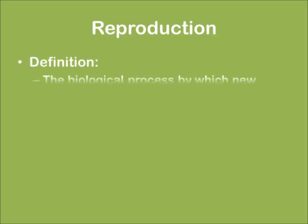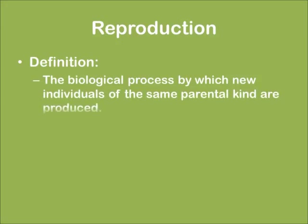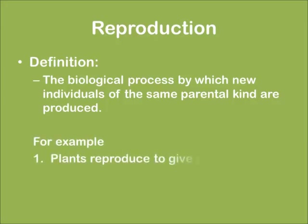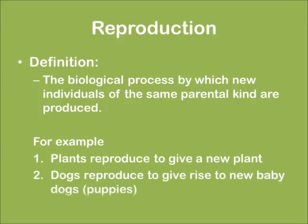Reproduction is a biological process by which new individuals of the same parental kind are produced. For example, plants reproduce to give a new plant. Dogs reproduce to give a new baby dog or puppy.